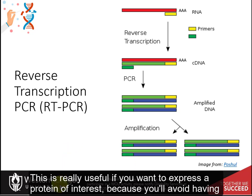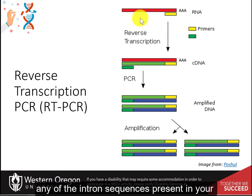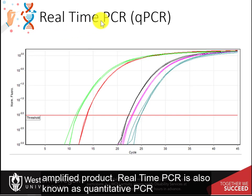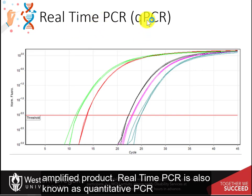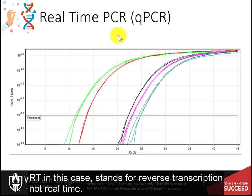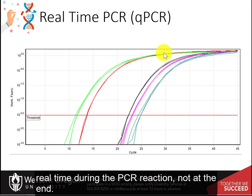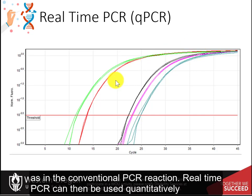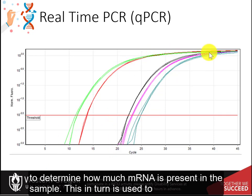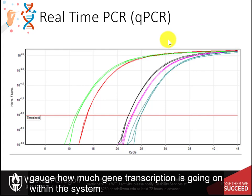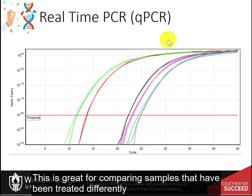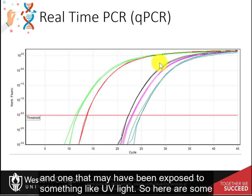RT-PCR is really useful if you want to express a protein of interest, because you avoid having any of the intron sequences present in your amplified product. Real-time PCR is also known as quantitative PCR, or qPCR — don't get it confused with RT-PCR, where RT stands for reverse transcription, not real-time. Real-time PCR monitors the amplification of targeted DNA molecules in real-time during the PCR reaction, not at the end. It can be used quantitatively to determine how much messenger RNA is present in a sample, gauging how much gene transcription is occurring — great for comparing samples treated differently, such as a control versus one exposed to UV light.